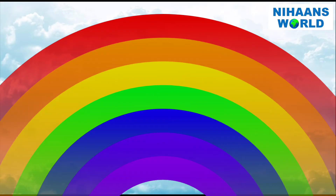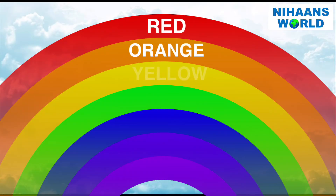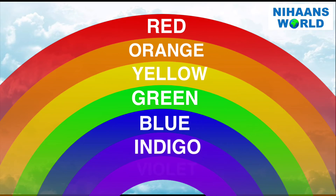The colors we see are red, orange, yellow, green, blue, indigo, and violet.